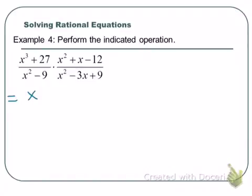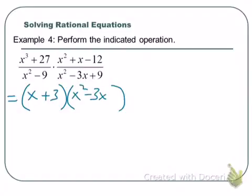x cubed plus 27 will factor as x plus 3 times x squared minus 3x plus 9. And I'll mention it again: whenever you factor cubes, if you've done it correctly, that remaining trinomial will be unfactorable — it's prime. It's going to have two imaginary solutions, and we're not worried about imaginary numbers here. So we don't have to worry about factoring that any further.